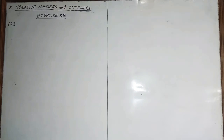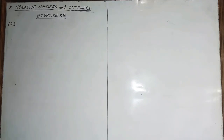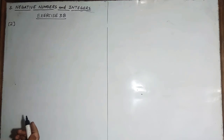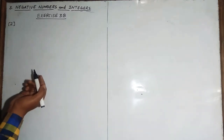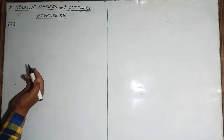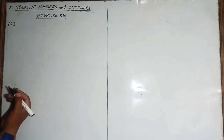Hello everyone. In this video we will do exercise 3B of our third chapter on negative numbers and integers. Question number one has two parts that you can do on your own. From question number two I will start here.